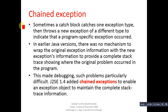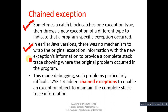First, we have to understand this theoretically. Sometimes a catch block catches one exception type and then throws a new exception of a different type to indicate that a program-specific exception occurred. In earlier Java versions, there was no mechanism to wrap the original exception information with the new exception's information to provide a complete stack trace showing where the original problem occurred. This made debugging such problems particularly difficult.